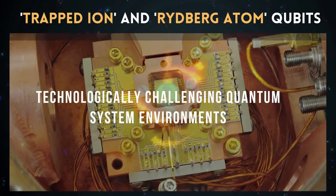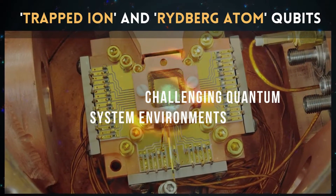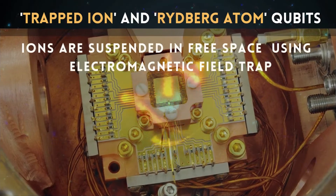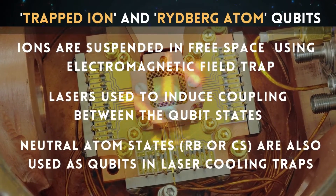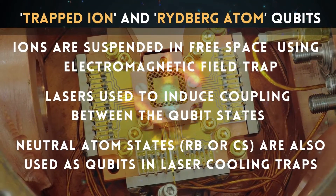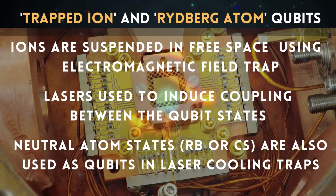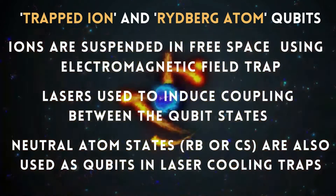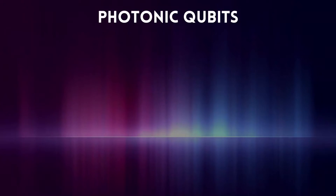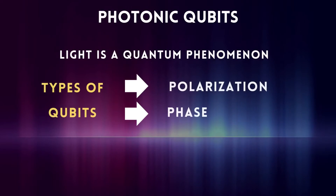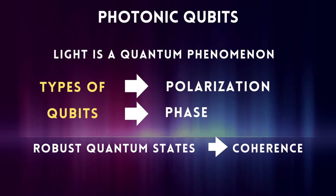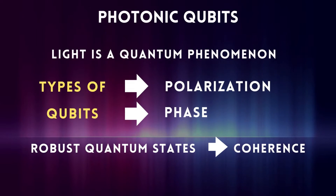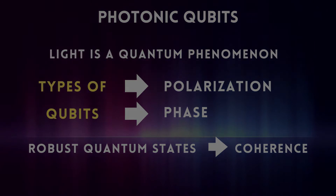One of the challenges in building a quantum computer is maintaining the coherence of the qubits, as any interaction with the environment can cause the qubits to lose their quantum properties. As a result, quantum computers must be carefully designed and constructed to minimize decoherence and other sources of noise.